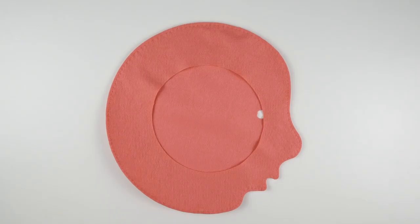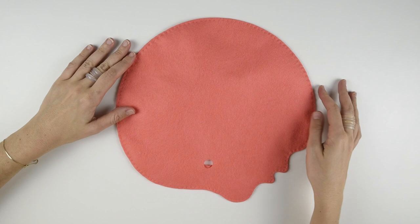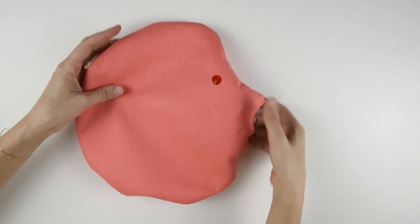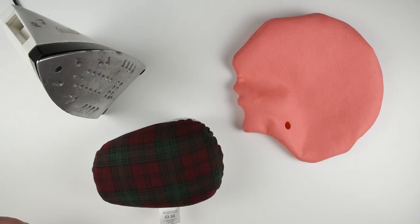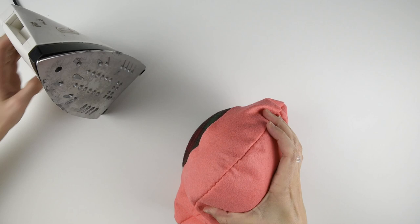Once you've finished your seam flip the hat right side out. Carefully poke the nose and lips out using your finger or a small tool like a capped pen. You can smooth out your work by ironing along the seam using the curved surface of the tailor's ham to press on.